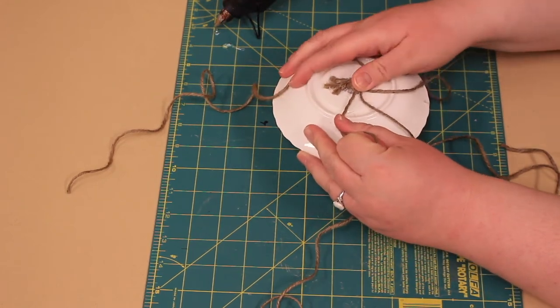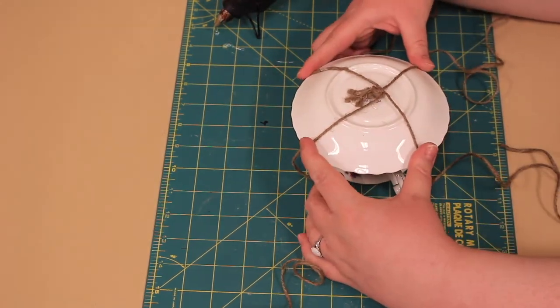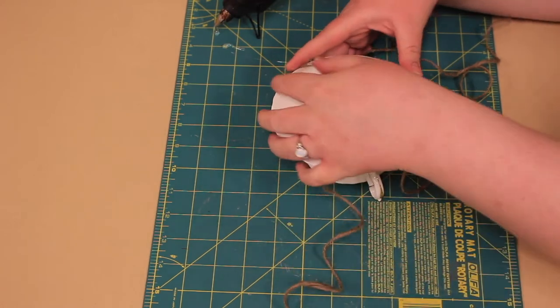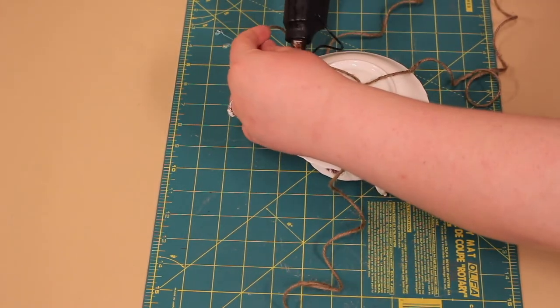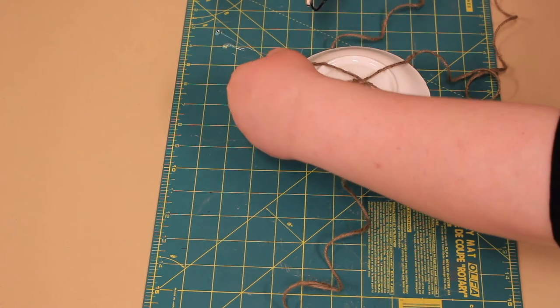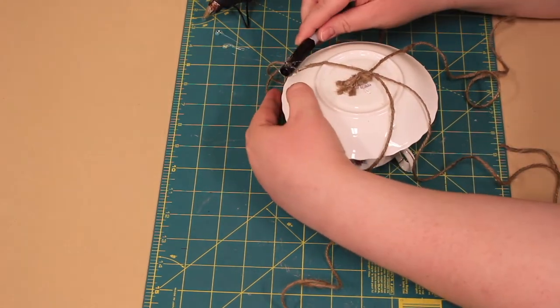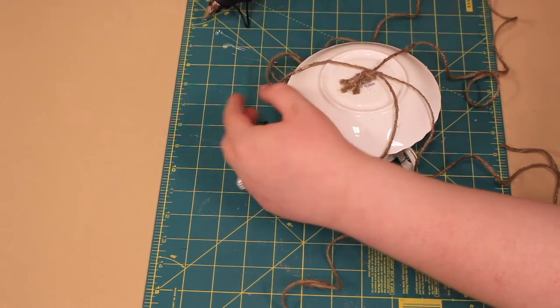Then, pull all four strands out to the sides of the saucer, making sure they are as evenly spaced as possible. It may take you a few tries to get it just right. Glue these strands down onto the saucer near the inner and outer rim.